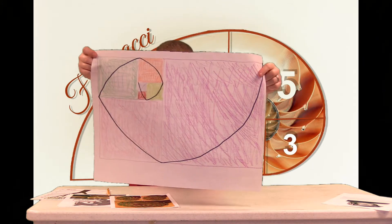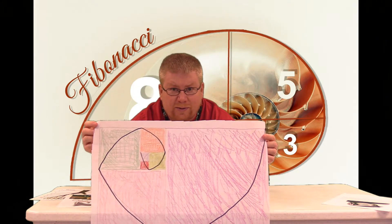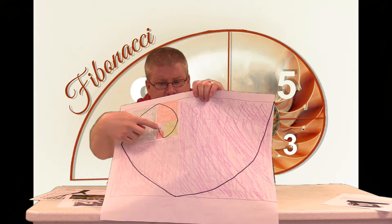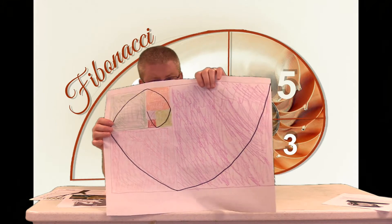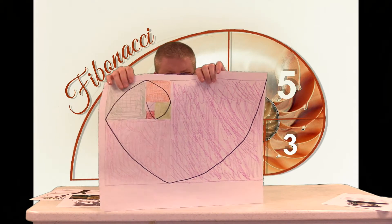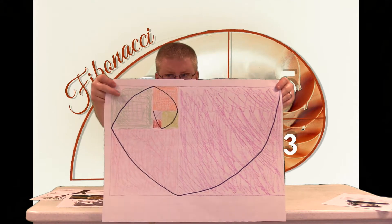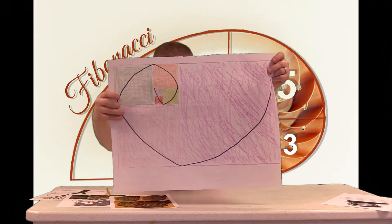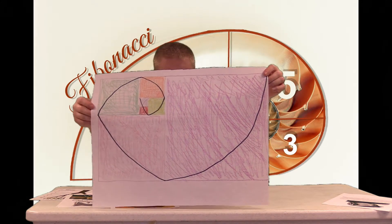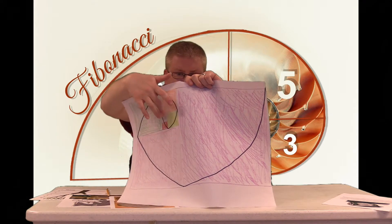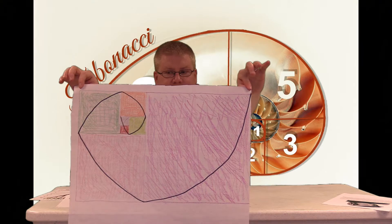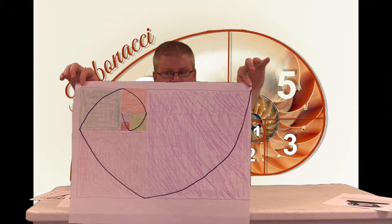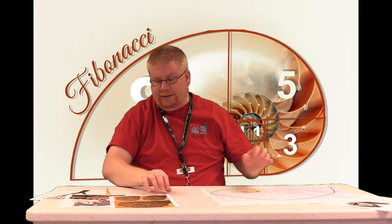He did a thing where he drafted the numbers on a graph. The first number was one, so he drafted a one-by-one box, and the second number was also a one-by-one box, then you get a two-by-two and a three-by-three, then five-by-five, then eight-by-eight, and thirteen-by-thirteen. When you do this, it creates a cool spiral that you can see on the graph — if you connect all the corners of these boxes you get this really cool spiral.